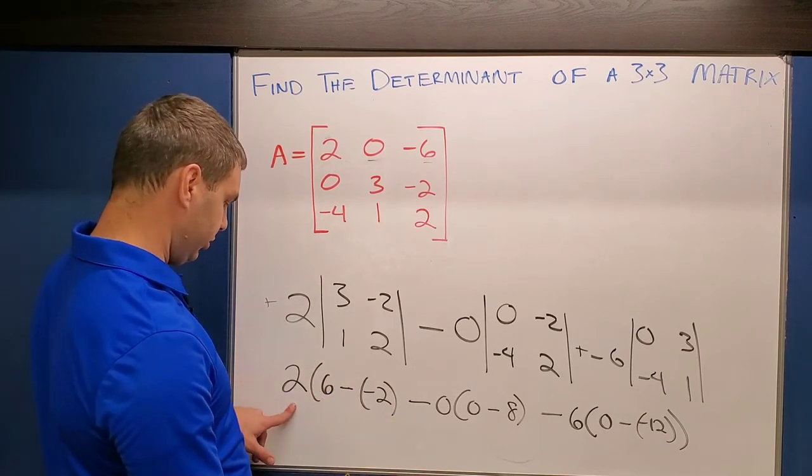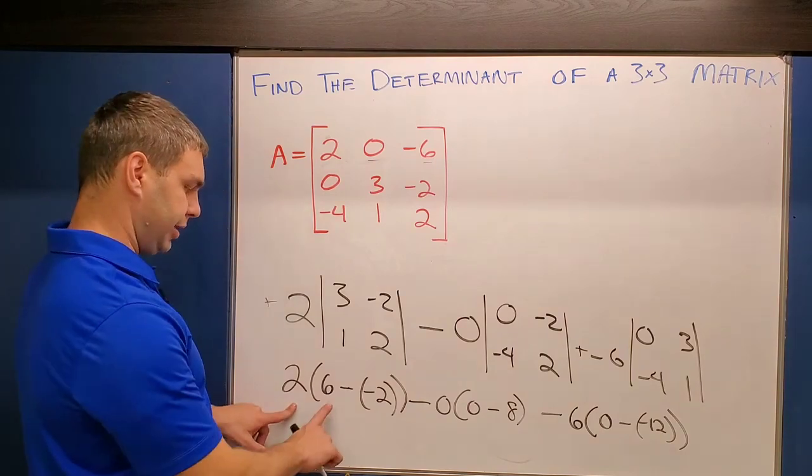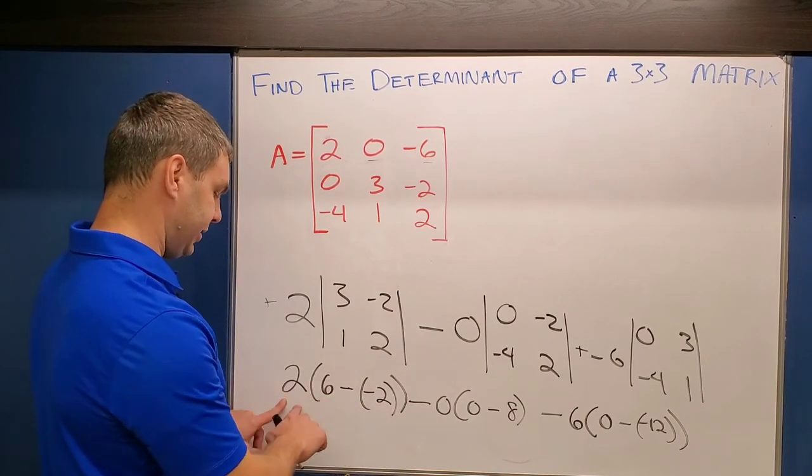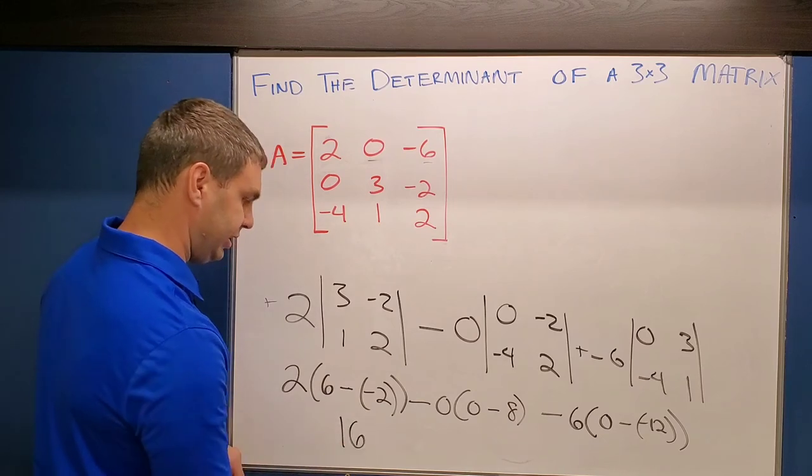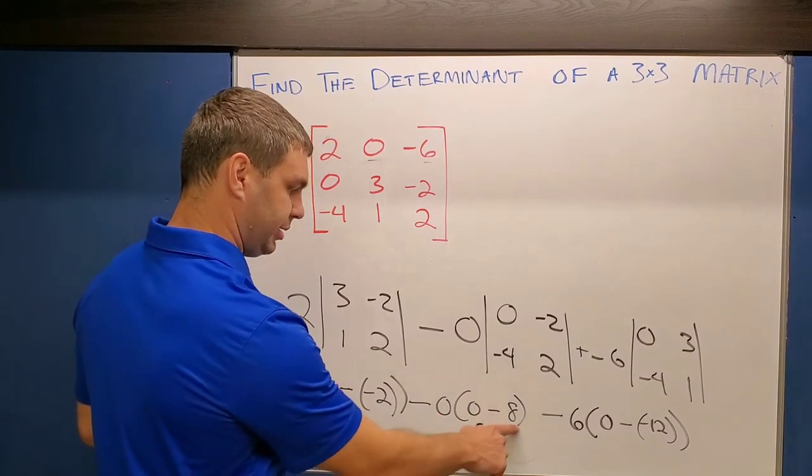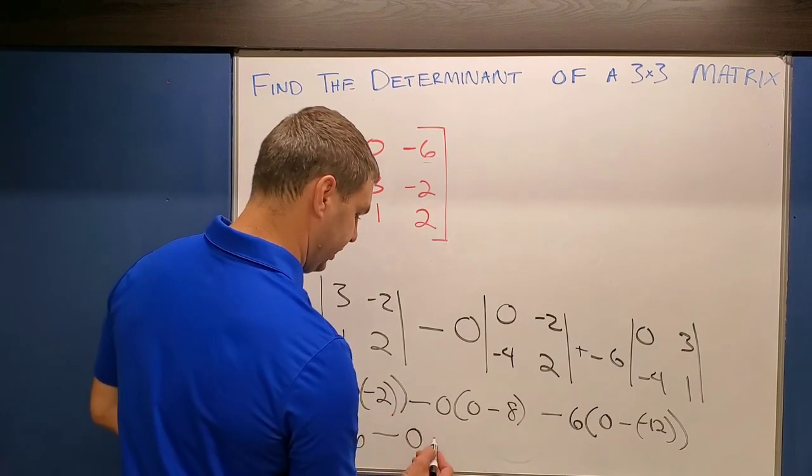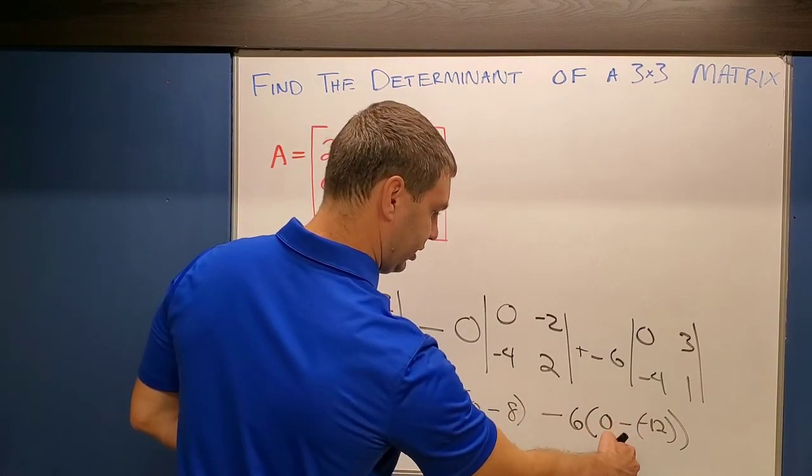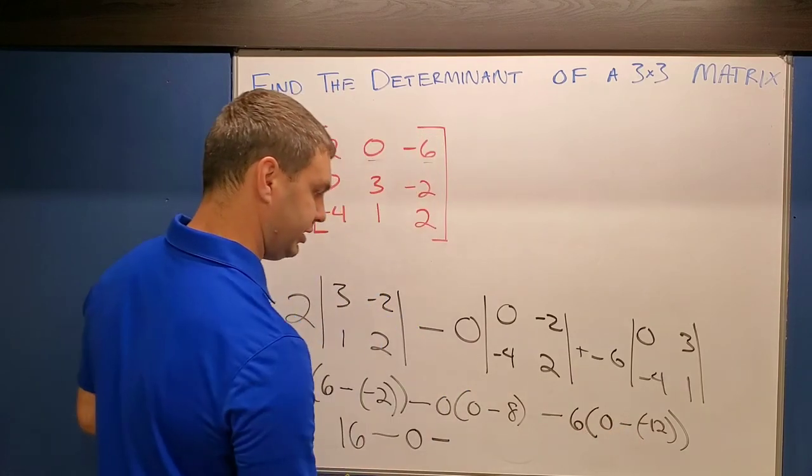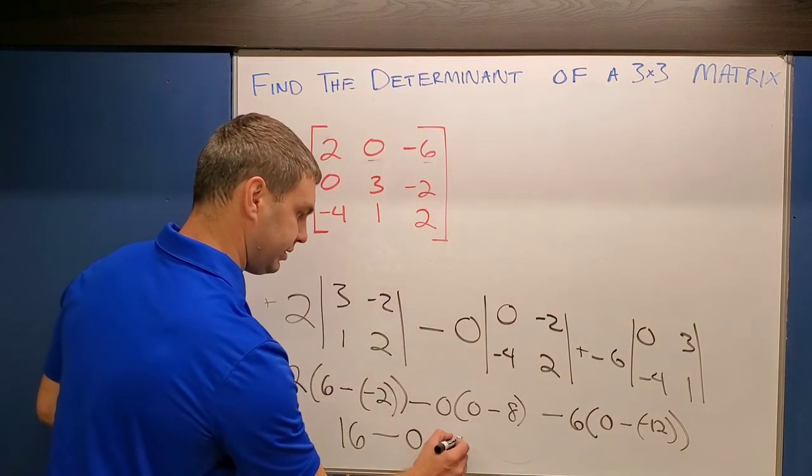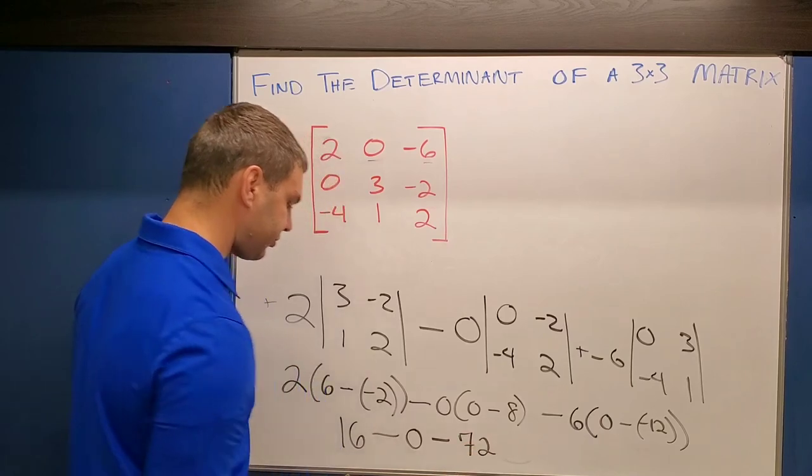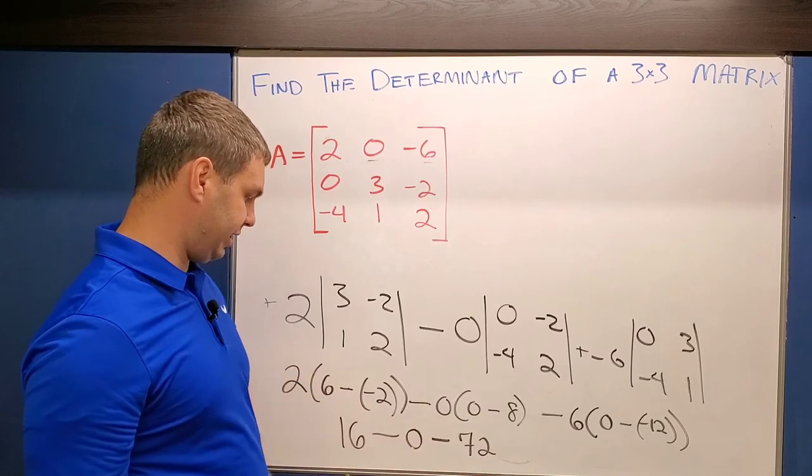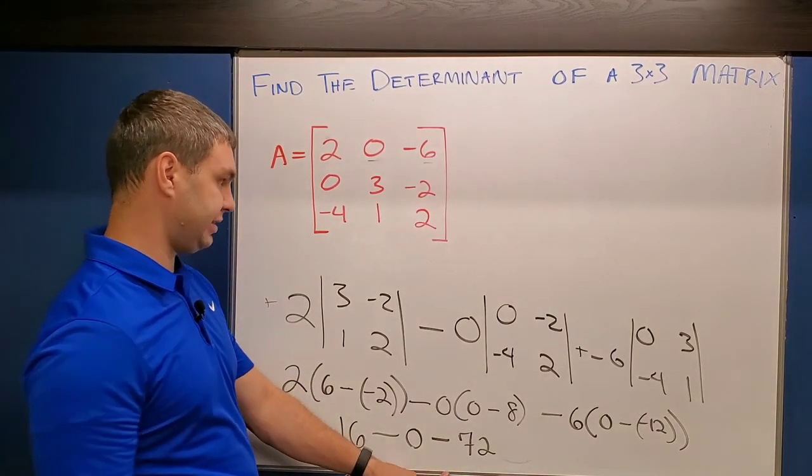We have two times, I think I forgot parentheses there, two times six minus negative two. Well, six plus two is eight. Eight times two is 16. Minus zero times anything is still zero. So minus zero and then minus six. This is going to be zero plus 12 is 12. Six times 12 is 72. So this would be minus 72. And 16 minus zero is still 16. 16 minus 72 is negative 56.